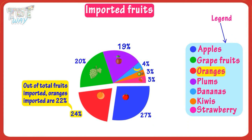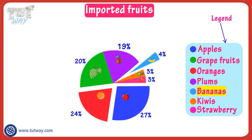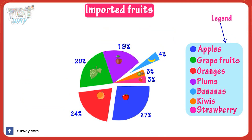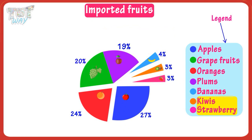The percentage of bananas imported out of total fruits imported is only four percent. The fruits which are imported the least are kiwi and strawberries, and their share out of total fruits imported is only three percent each, which is the least of all fruits.